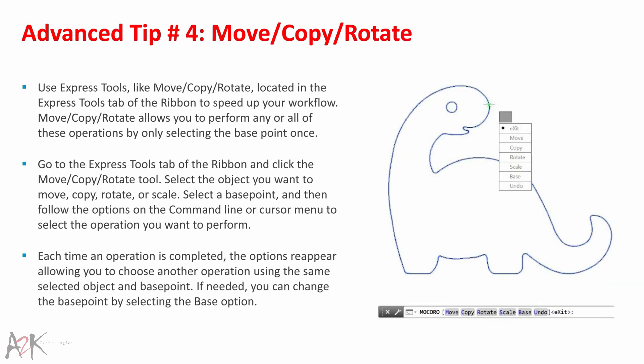Advanced Tip 4 – Move, Copy, Rotate. Use Express Tools like Move, Copy, Rotate — located in the Express Tools tab of the ribbon — to speed up your workflow. This tool allows you to perform any or all of these operations by only selecting the base point once. Go to the Express Tools tab and click the Move, Copy, Rotate tool. Select the object you want to move, copy, rotate or scale. Select the base point, then follow the options on the command line or cursor menu. Each time an operation is completed, the options reappear allowing you to choose another operation using the same selected object and base point. If needed, you can change the base point by selecting the base option.